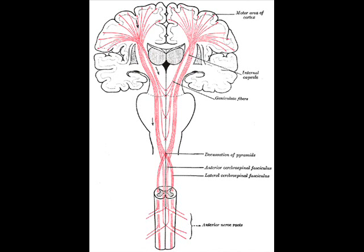Hi, I'm Dr. Dave. Welcome to the neuroanatomy video. The internal capsule is an area of white matter in the brain that separates the caudate nucleus and the thalamus from the lenticular nucleus. The internal capsule contains both ascending and descending axons.